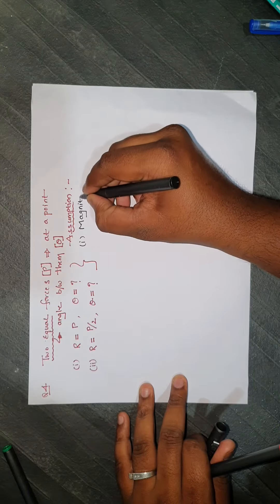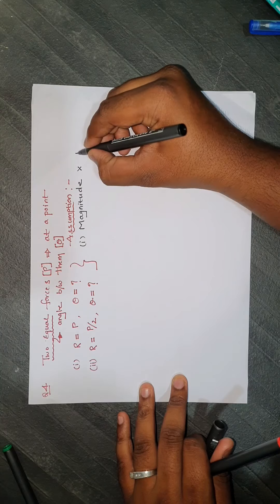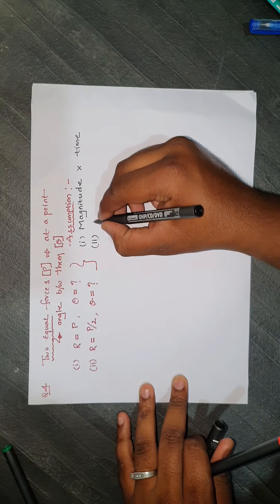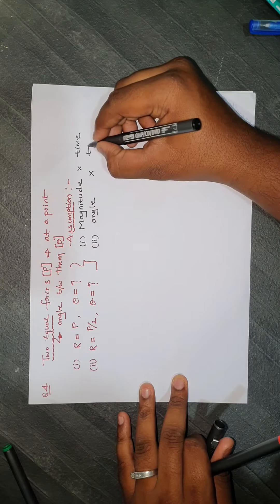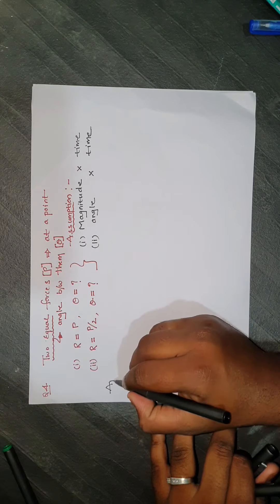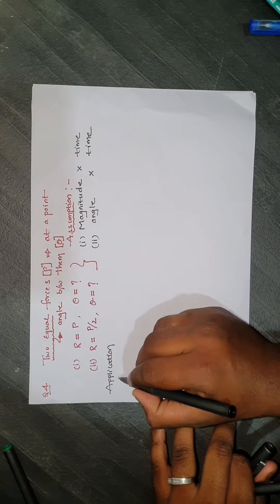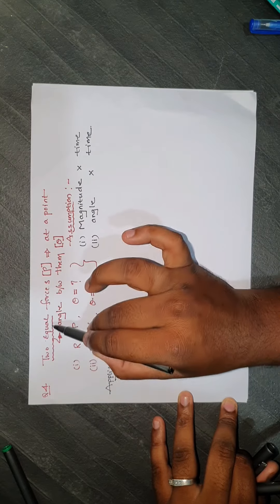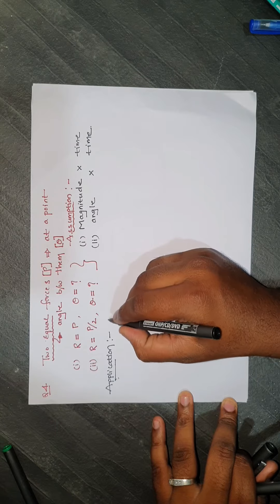Before attempting the question, note the assumptions: the magnitude of the two forces does not change with respect to time, and the angle between them is also constant. Reading the question, since two equal forces act at a point, we apply the parallelogram law of forces.